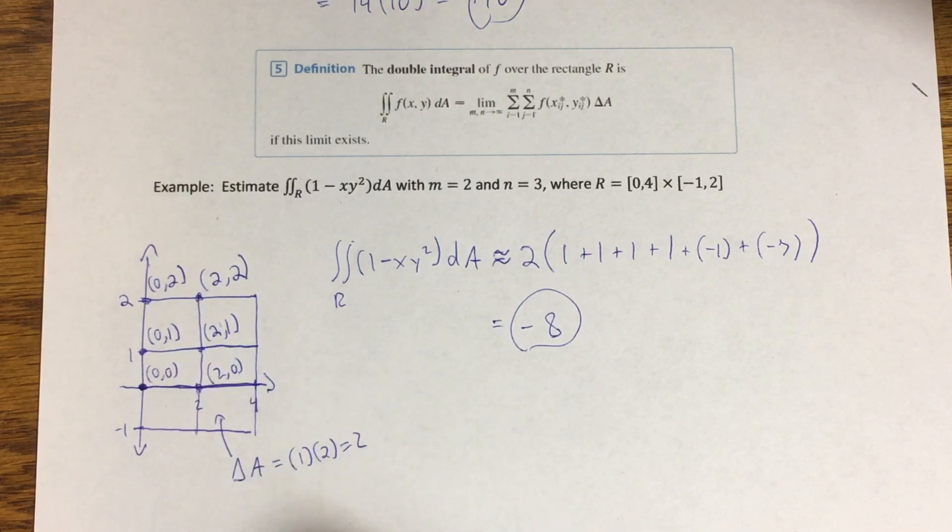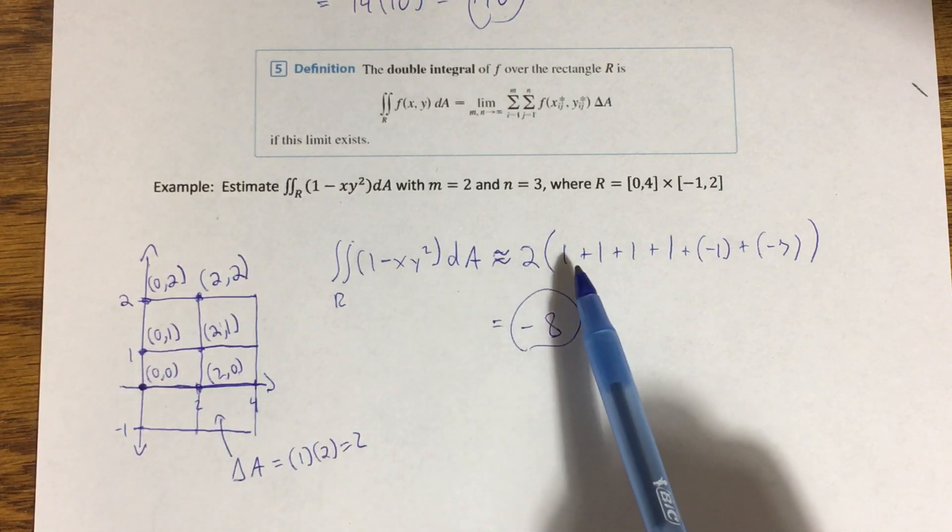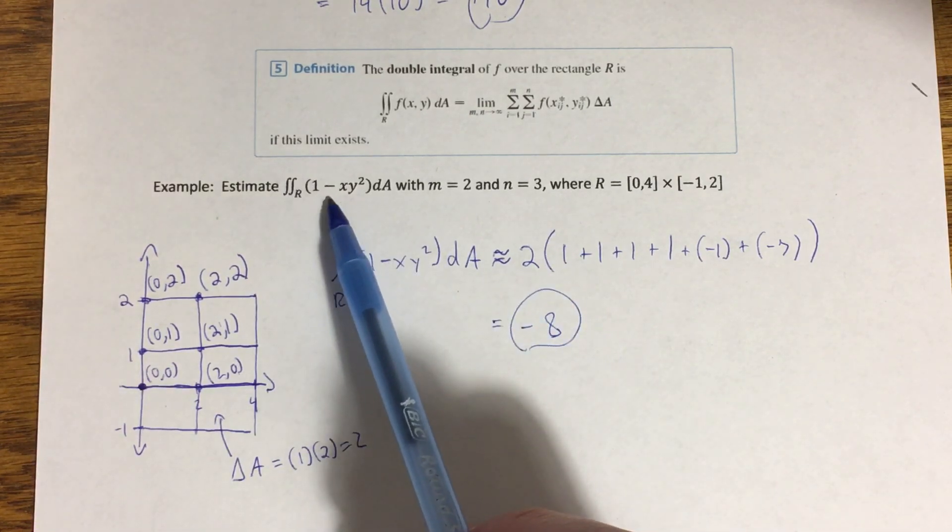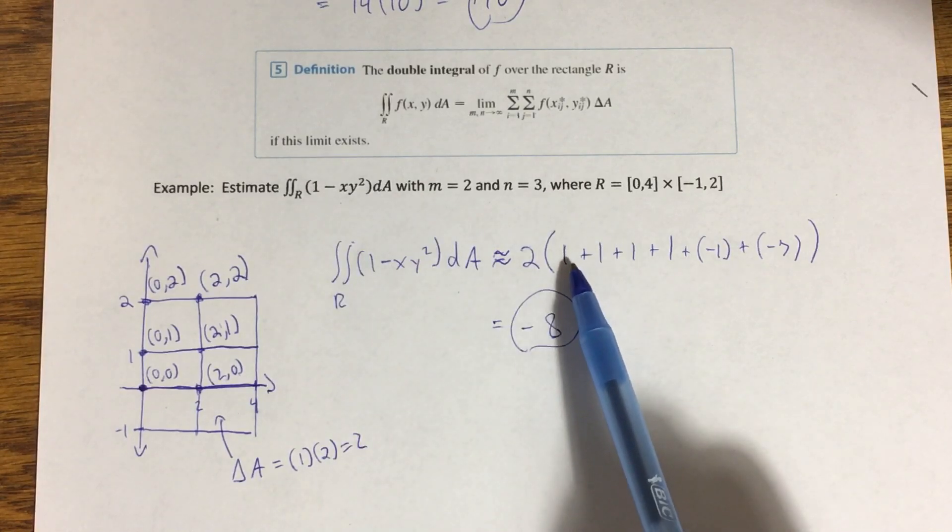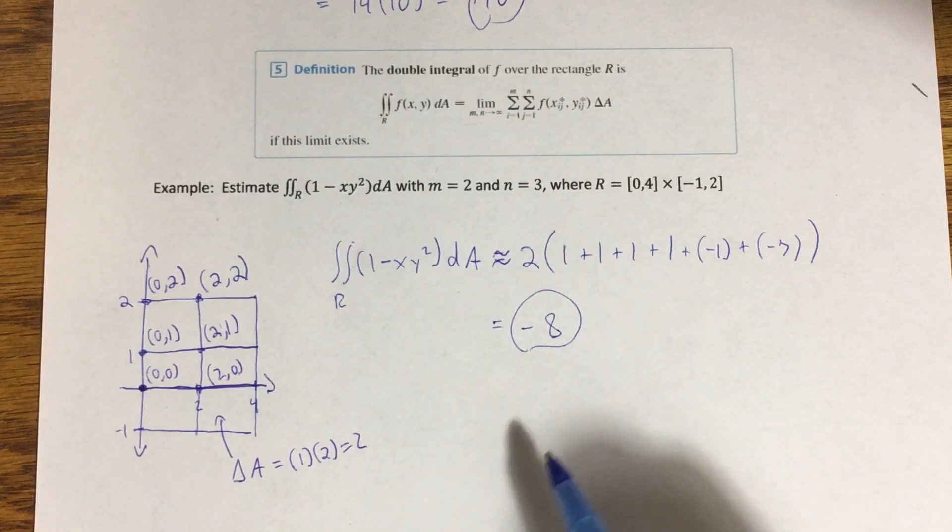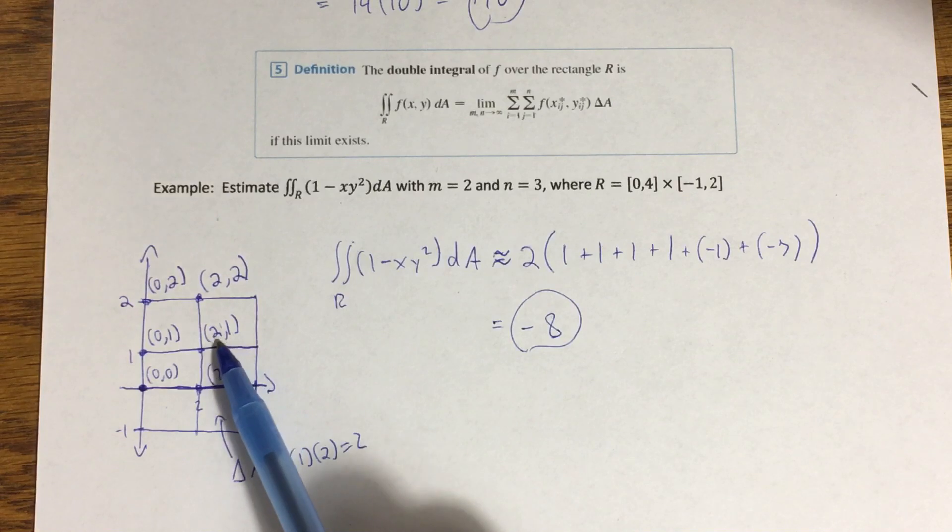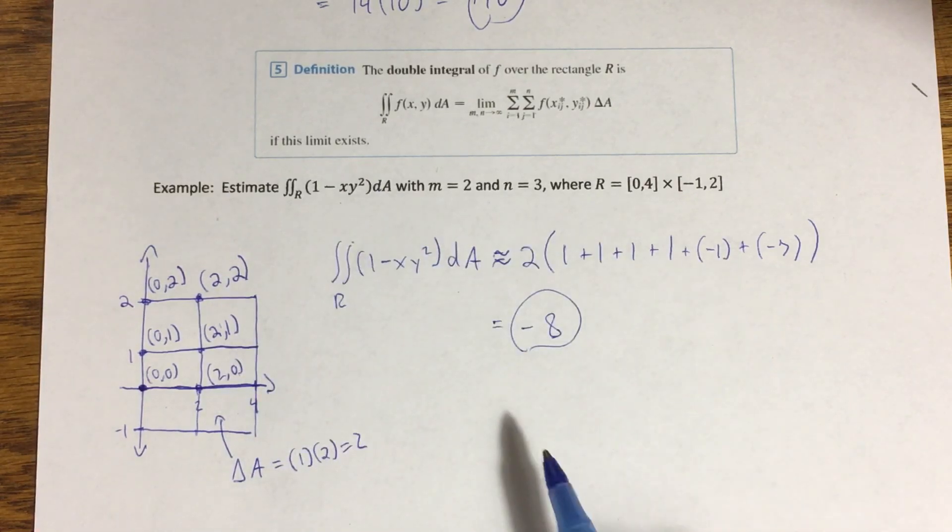And the reason I'm doing that is if you look at the coordinates of these points, I get a lot of zeros in my coordinates. For this particular function, that's nice because if you notice, if either x or y is equal to zero in this function, then the integrand here just becomes a one.